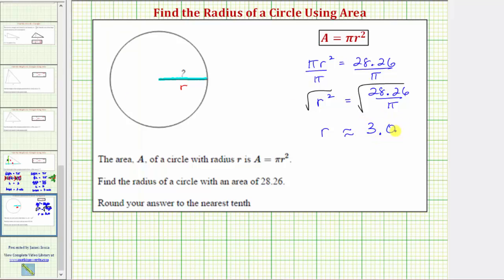It is important to include the point zero, because this does show we rounded to one decimal place, or the tenths place value. So the radius is approximately three point zero units, if the area of the circle is 28.26 square units. Before we go, let's check this.